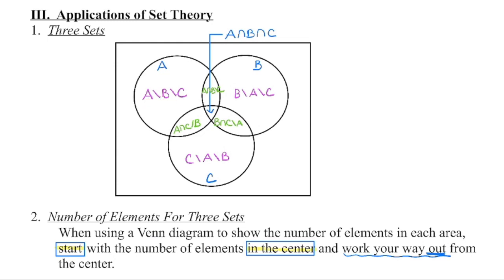Same thing with B — this whole circle represents B, and this section right here represents elements belonging to set B but not A and not C. And this section right here refers to C only: elements belonging to C but not part of set A and not part of set B.